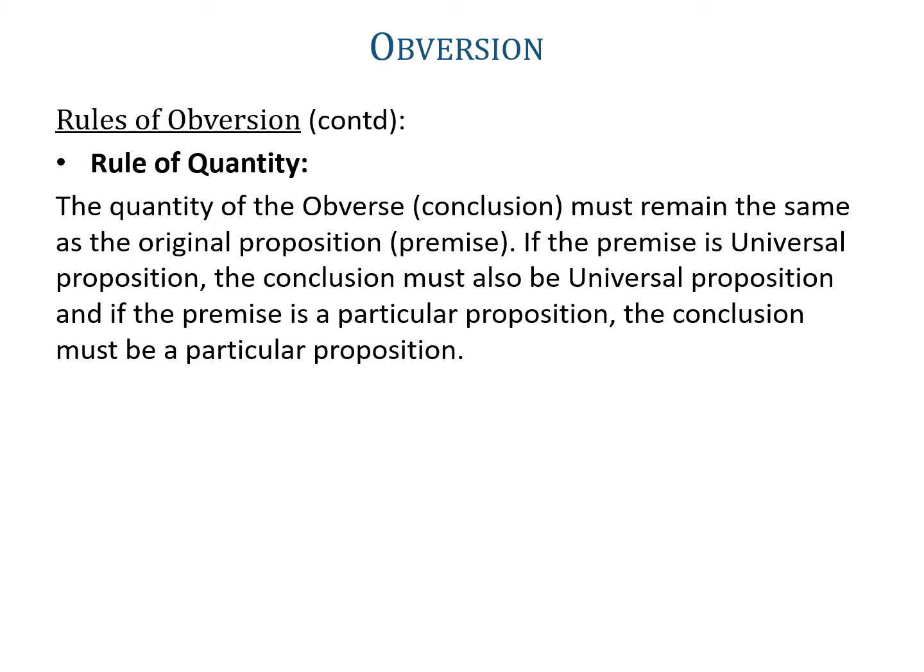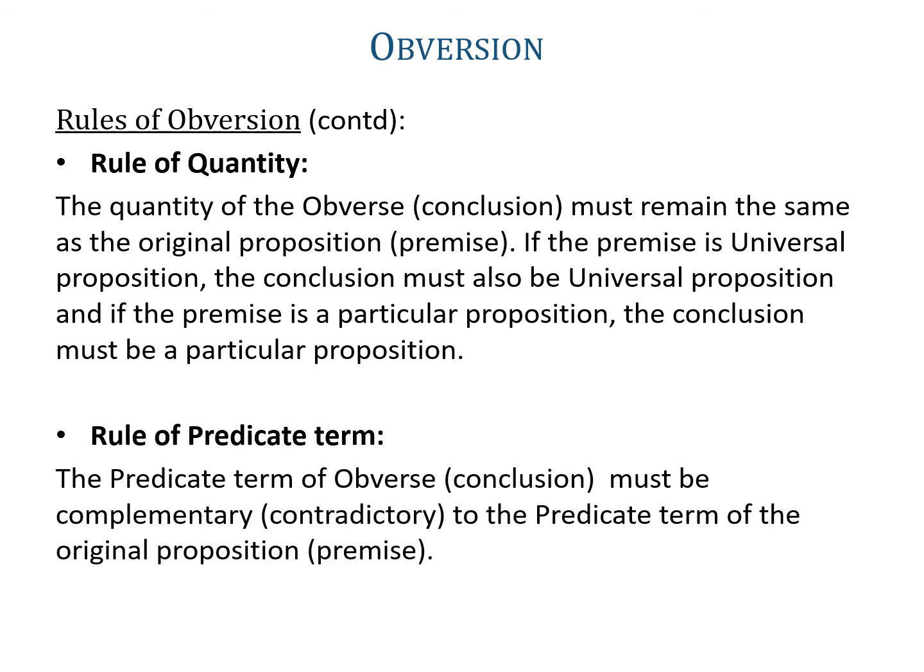The third rule of obversion is the rule of predicate term. The predicate term of the obverse, that is the conclusion, must be complementary, that is contradictory, to the predicate of the original proposition, that is the premise. So if in the original proposition the predicate is P, then in the conclusion the predicate will be non-P, which is complementary to P.